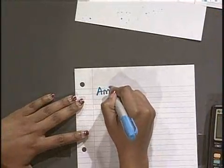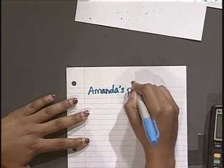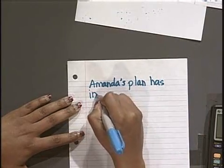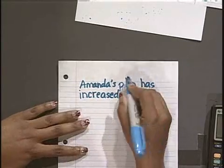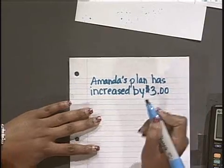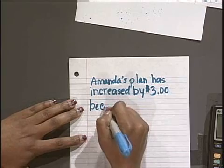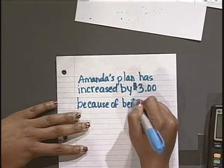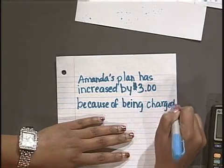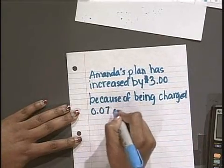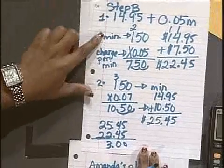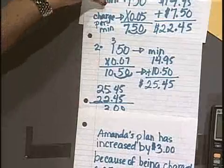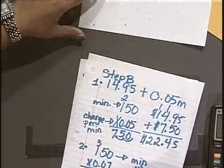So Amanda's plan has increased by $3.00. Because now they're charging her $7.00. Okay. All of this is a part of my step two. So I have my step A $22.45. I have my bullet one. And now I have my bullet two. So those are all considered my answer because I use my numbers as well as my symbols and my words.